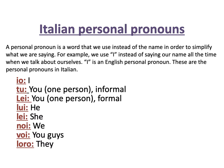Then we have lui, which just means he. We also have lei, which means she. When it means she and not you, lei does not have a capital L. So lei can mean both 'you' in a formal manner or 'she.' Then we have noi, which means we; voi, which means you guys. Notice we have a special version for when we're talking to a group of people — we don't say tu, we don't say lei, we say voi. And finally loro, which means they.